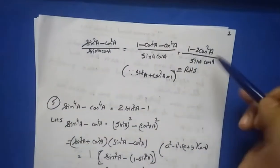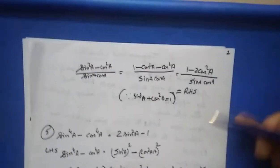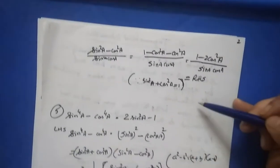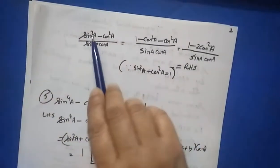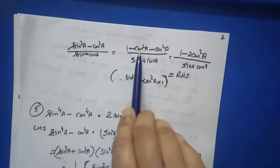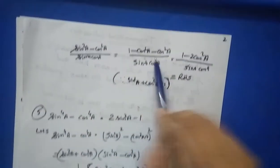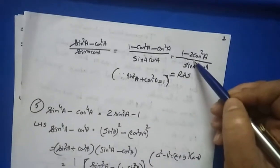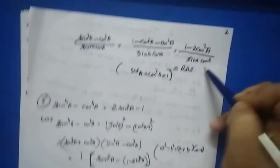For question four, substitute tan a = sin a/cos a and cot a = cos a/sin a, then take LCM to get (sin²a − cos²a). Now compare with the right hand side — the answer should be in terms of cos²a. Change sin²a to (1 − cos²a): you get 1 − cos²a − cos²a = 1 − 2cos²a, over sin a·cos a. Write the reason: sin²a + cos²a = 1.